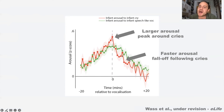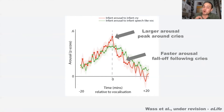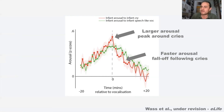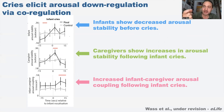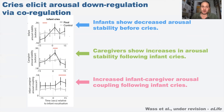The other thing I want to draw your attention to on this graph is something quite counterintuitive: following a cry, they have a faster fall-off in arousal than they do following a speech-like vocalisation. You get a higher peak in arousal around a cry, but the arousal falls off faster following it. This is because cries elicit down-regulation via co-regulation - when the baby does a cry, the mother changes her behaviours to help the baby calm down.